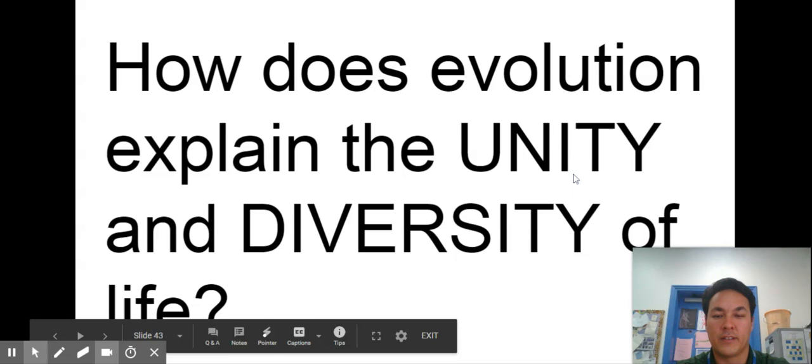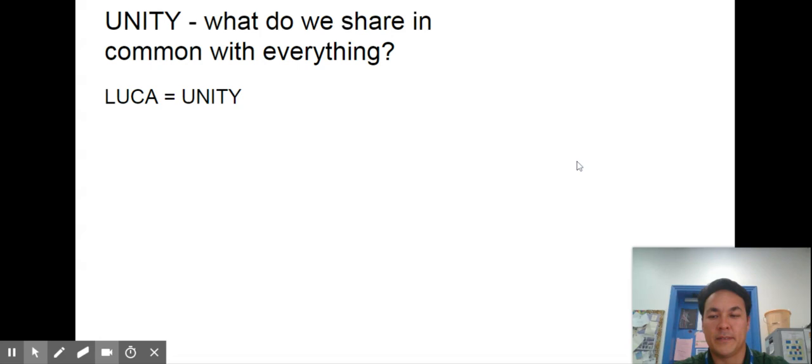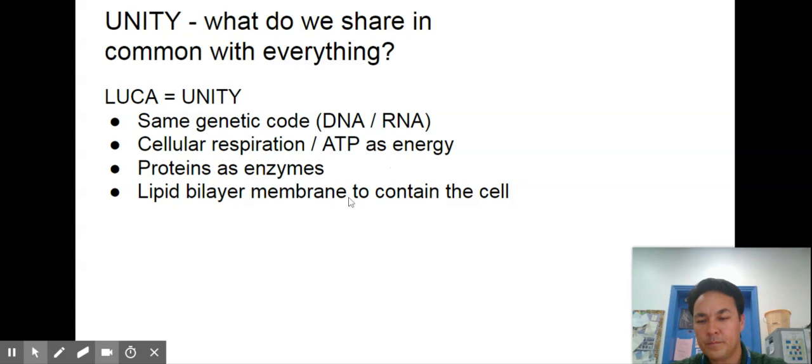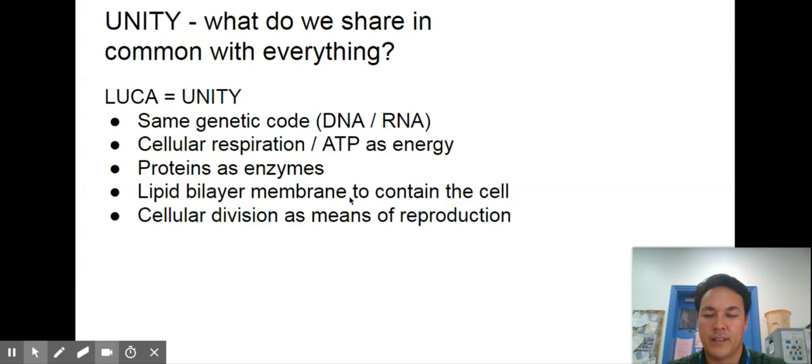All right how can evolution explain the unity and diversity of life so what do we share in common with everything well in common with everything we got from the LUCA and the LUCA was our friend we talked about just today in class. So we said we get the same genetic code DNA or RNA there's some debate as to which genetic code started life with but regardless it's ubiquitous today that organisms use DNA and RNA. Ubiquitous meaning everywhere that organisms use ATP as a currency of energy that organisms use proteins as enzymes and you know the very first ones might have used RNA as enzymes but then proteins overtook them. They have some type of lipid membrane to contain the cell and they use cellular division as a means of reproduction so we got this from the LUCA.